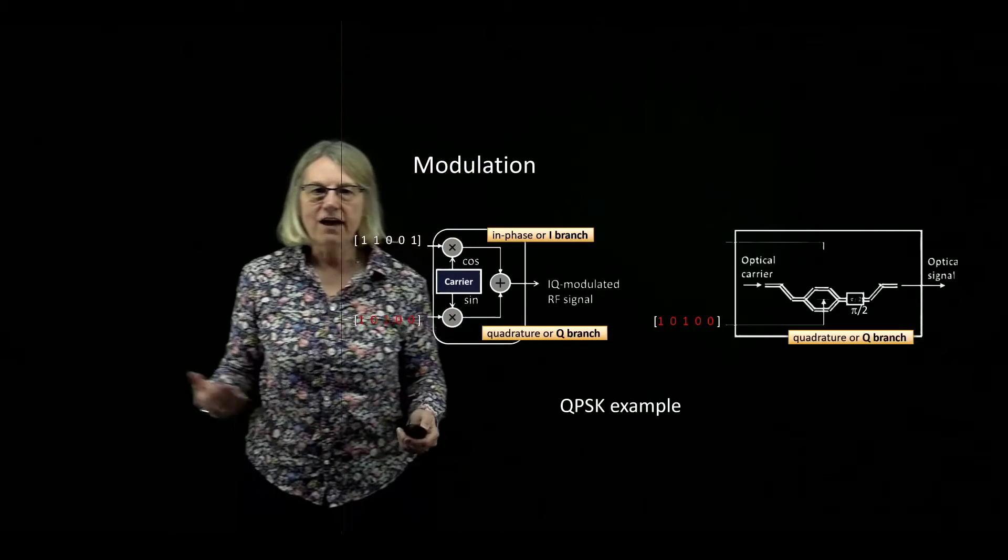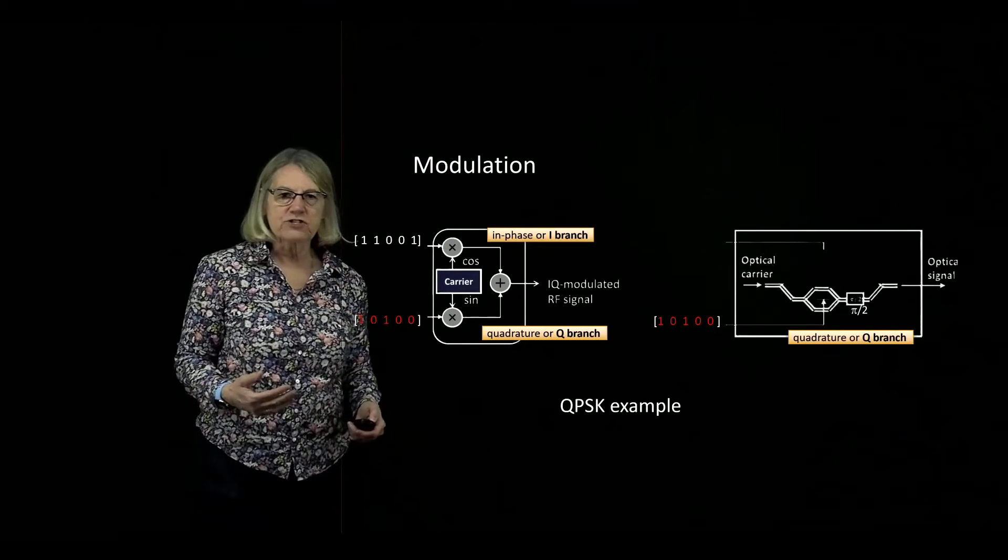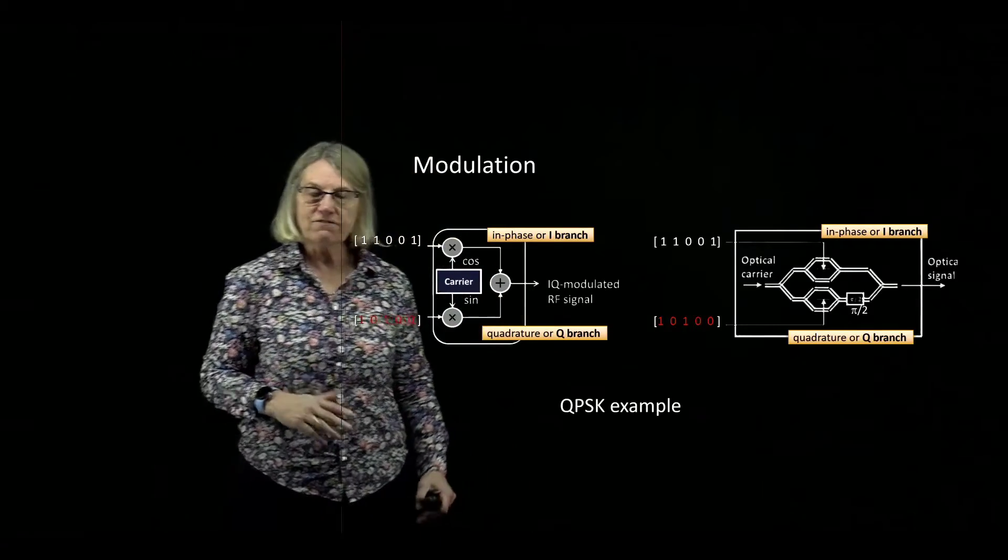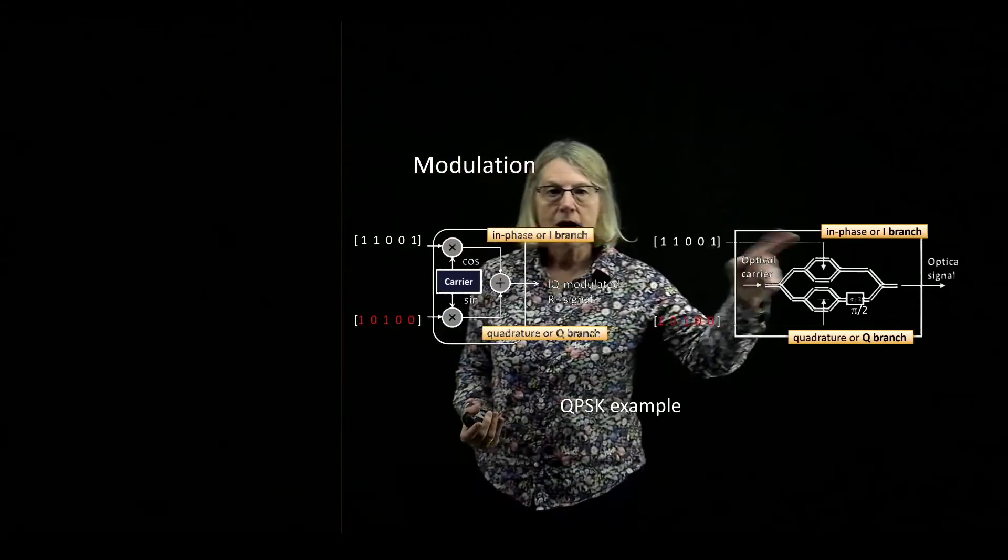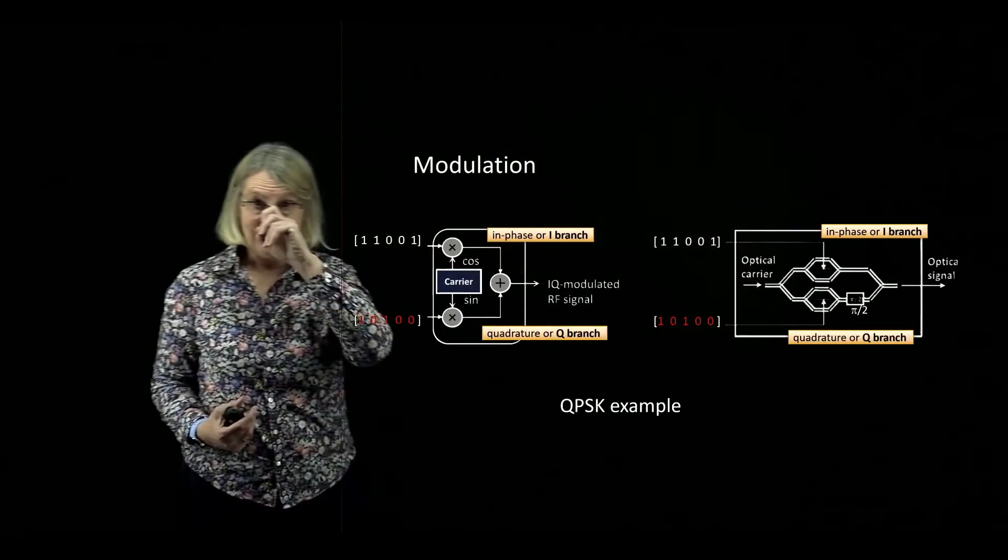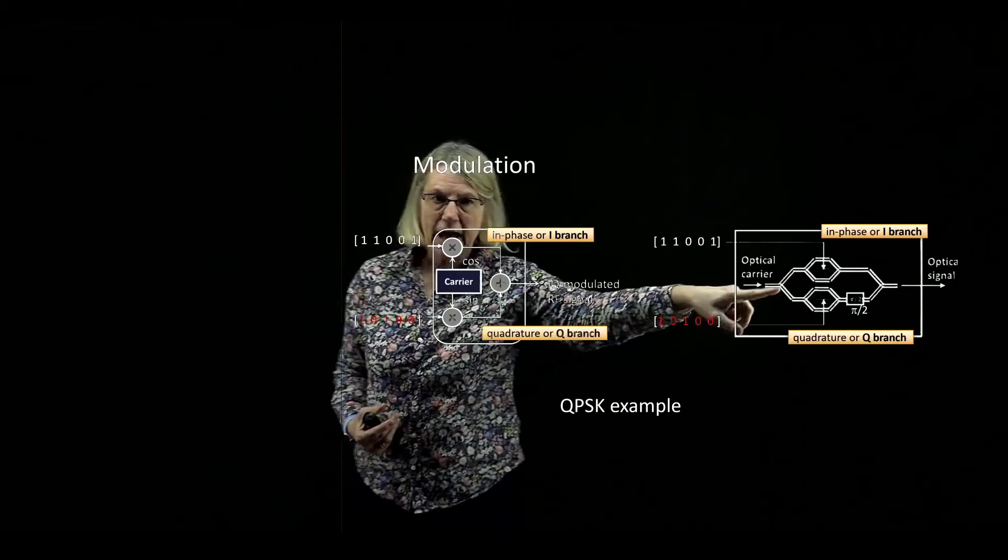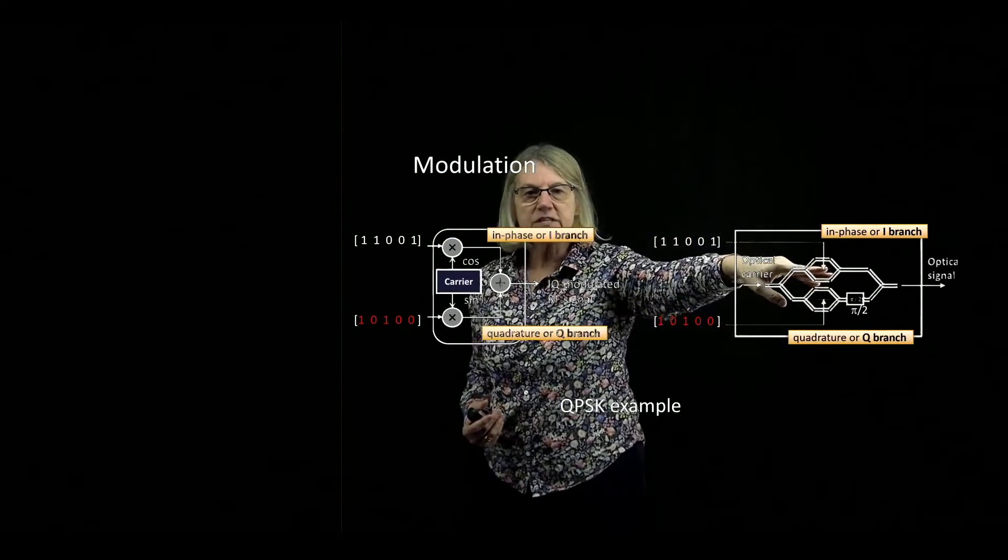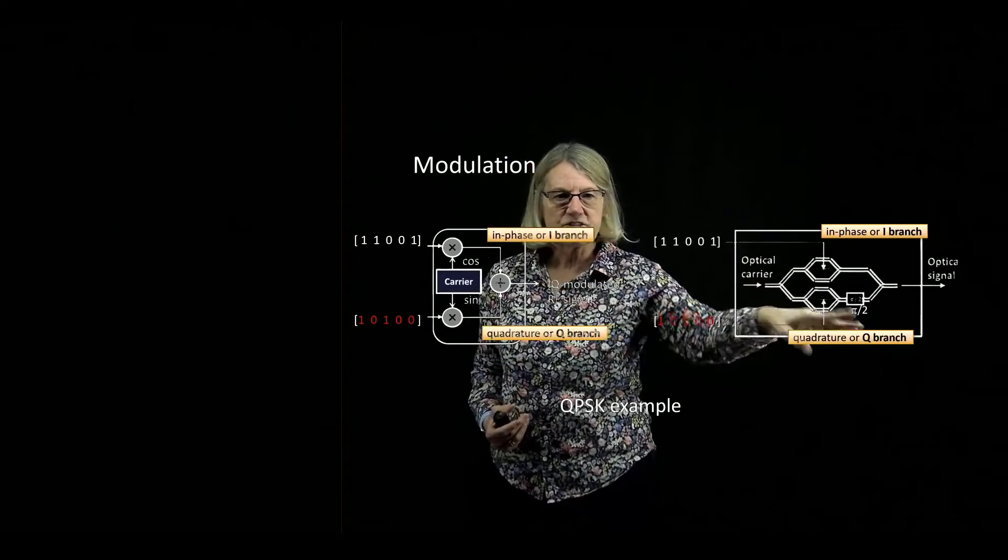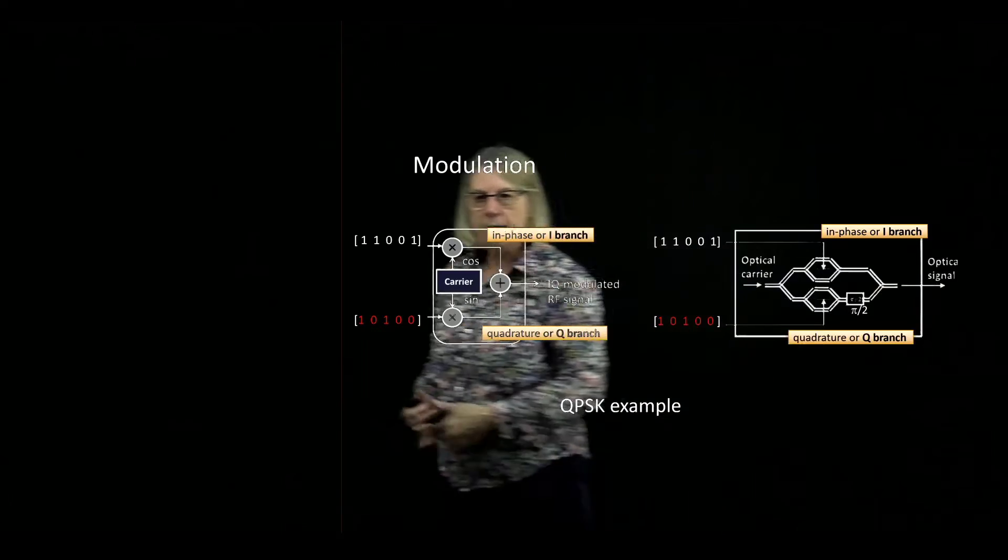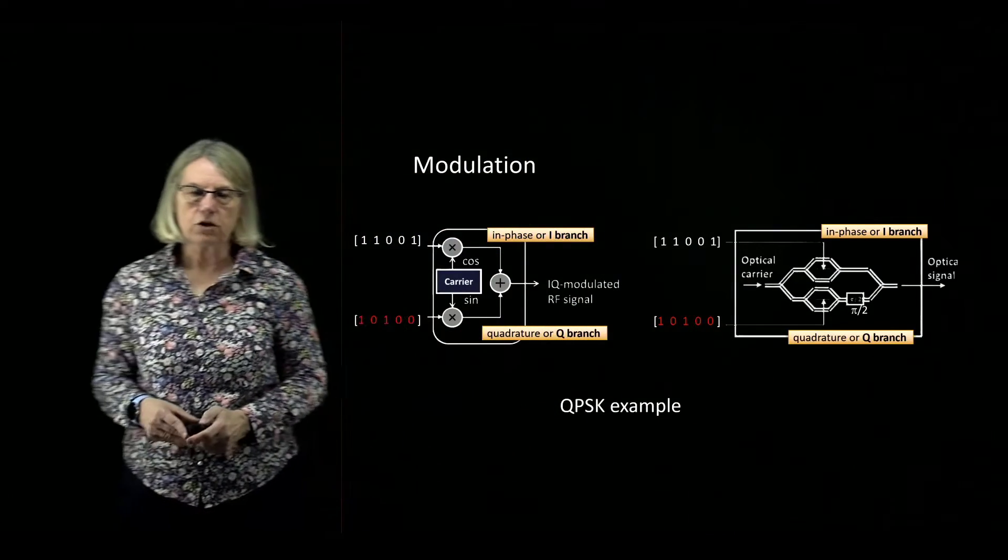So of course I have in one modulator structure, I have both the in-phase and the quadrature branches, and in fact they're in the form of a Mach-Zehnder interferometer architecture. So here the shared optical carrier comes in, I send one data stream to the upper arm to the I branch, I send the other data stream to the Q branch. They get combined together on one optical signal for transmission over the fiber.